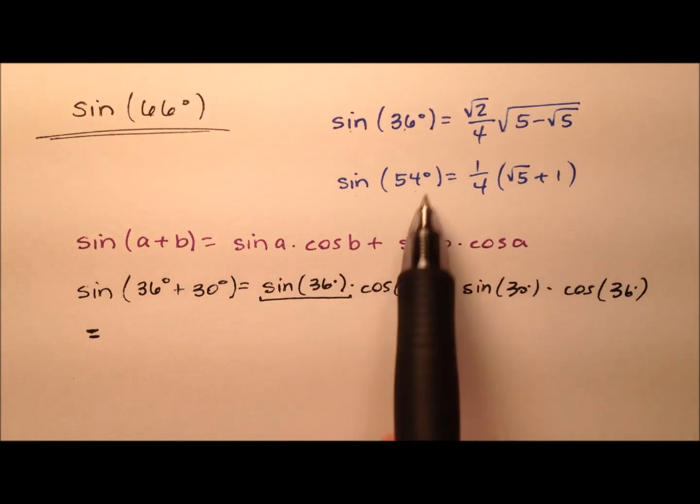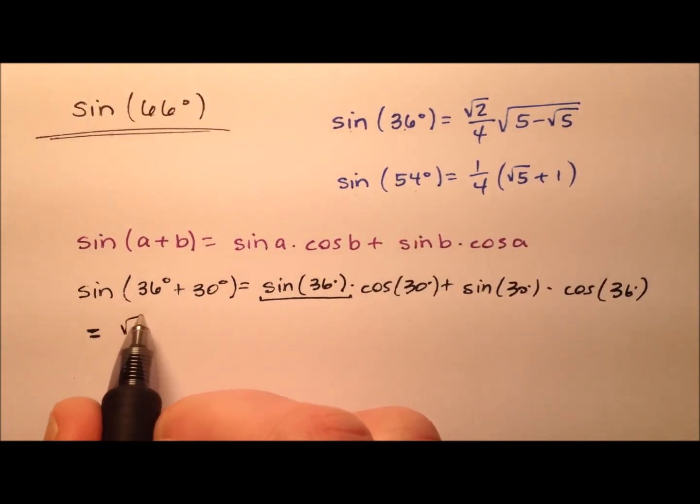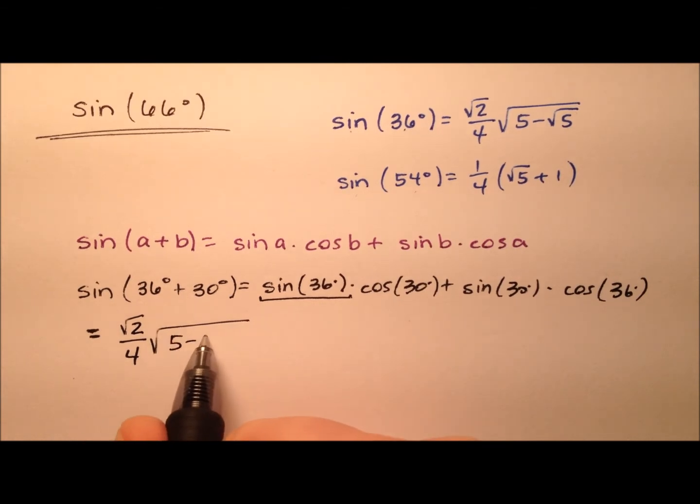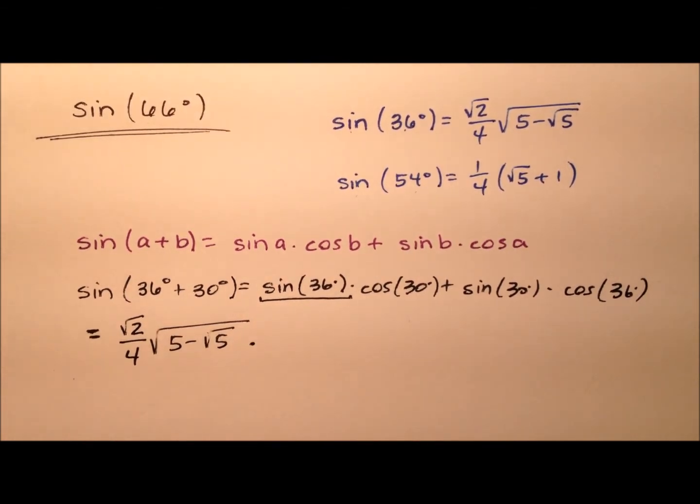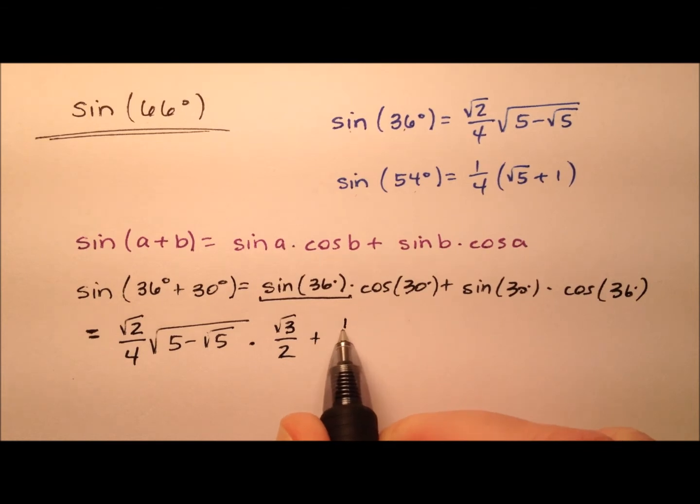I'm going to use that first one, the sine of 36 degrees, and that's the square root of 2 over 4 multiplied by this radical expression here. And to that we're going to multiply by cosine of 30, which is the square root of 3 over 2, and then we're going to add to that the sine of 30, which is one half.